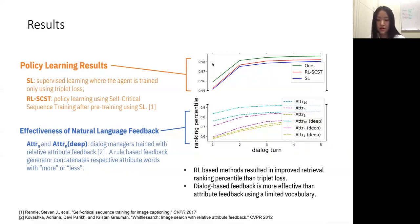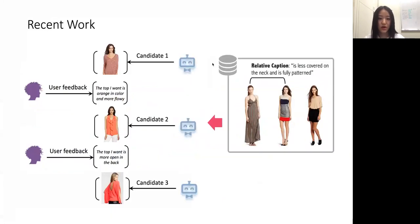In summary, reinforcement learning-based optimization methods for our dialogue manager resulted in improved retrieval performance, and natural language-based feedback is more effective than attribute-based feedback. We did this work roughly last year, and we felt this is a very interesting problem, and this year we did more follow-up work on this.